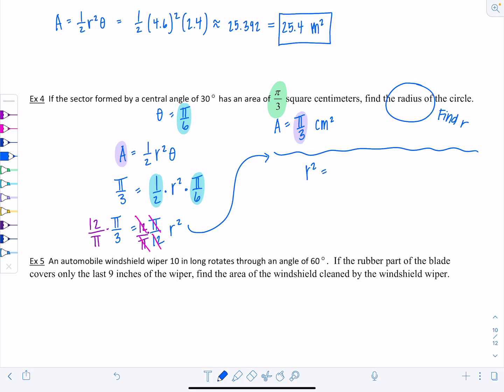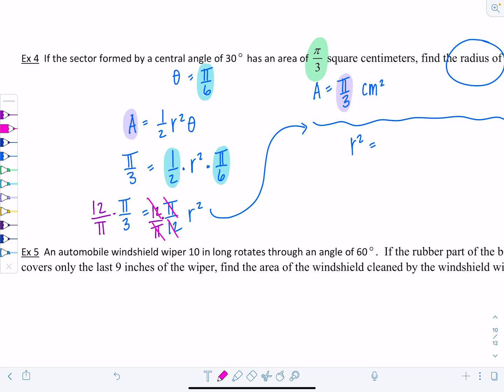These all cancel, so the coefficient on r squared is just 1. On the other side, the π cancels. Then you just have 12 over 3, so that's going to be 4. r squared is 4. It doesn't make sense to have a negative radius. That only comes up much later in your math career. So r equals positive 2. Don't forget the units because they told me the area's in centimeters squared. So the radius must be measured in centimeters as well. Check that out. We are done.